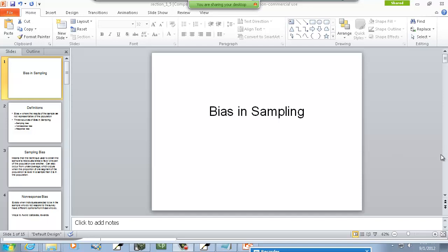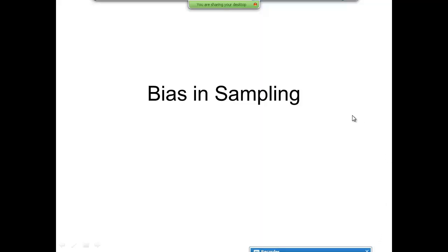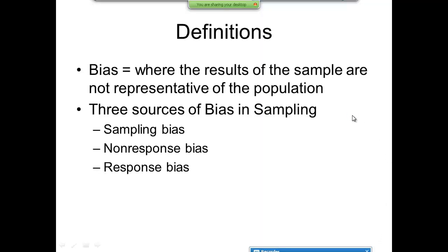Let's take a look at bias in sampling. Bias is where the results of the sample are not representative of the population. There are three sources of bias in sampling: sampling bias, non-response bias, and response bias.